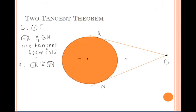Let's prove why this two tangent theorem is true. We're given circle T in this diagram, and we know that segments GR and GN are tangent segments. Points N and R are then points of tangency. And these two tangent segments are being drawn from the same external point G. So we want to prove that those two tangents GR and GN are congruent.